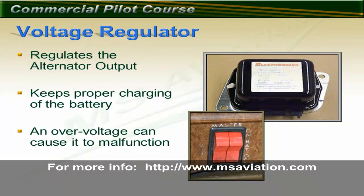An alternator's output depends upon how fast it spins. Most systems can't handle a varied rate. It is necessary to regulate the alternator's output and create a consistent voltage for the radios, lights, and other electrical devices. Too little voltage may not provide enough power for their operation, and too much voltage, or overvoltage, can cause damage. This is a picture of a voltage regulator — its whole purpose is to keep the alternator output at the desired level.